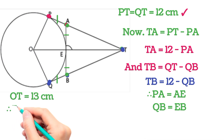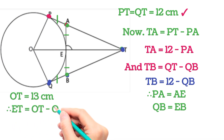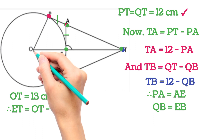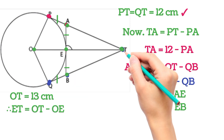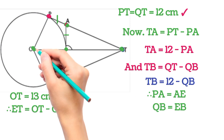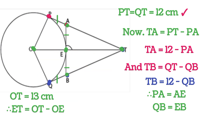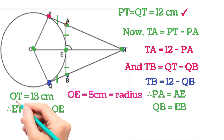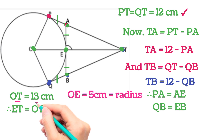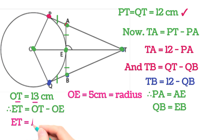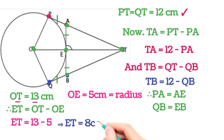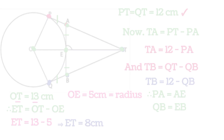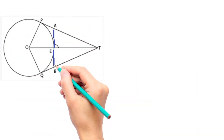OT is 13 centimeters and ET can be written as OT minus OE. Since OE is the radius, OE = 5 centimeters, and OT = 13 centimeters, so ET = 13 minus 5, giving ET = 8 centimeters.